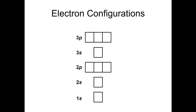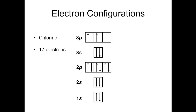Let's go back and figure out how to populate an orbital energy diagram and then turn that into an electron configuration notation. We'll consider chlorine, which is element 17. An uncharged atom of chlorine has 17 electrons, so we're going to populate this diagram with 17 electrons, following Hund's rule as we go. That gives us the orbital energy diagram populated with 17 electrons in the ground state.